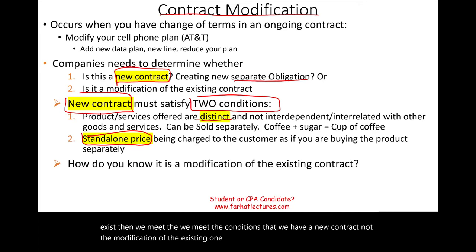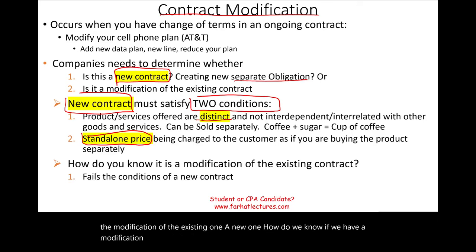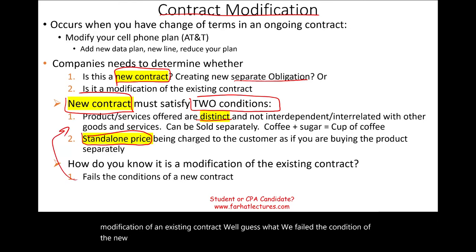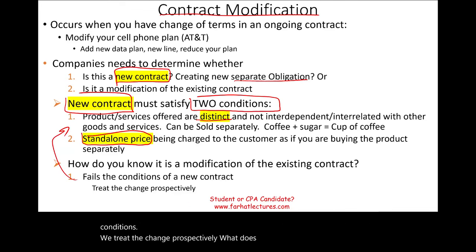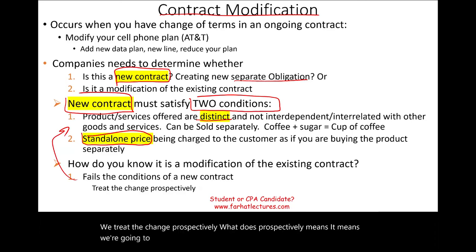How do we know if we have a modification of an existing contract? If we fail any of those two conditions, we treat the change prospectively — meaning we look at the present and going forward and make all the adjustments from that point on.